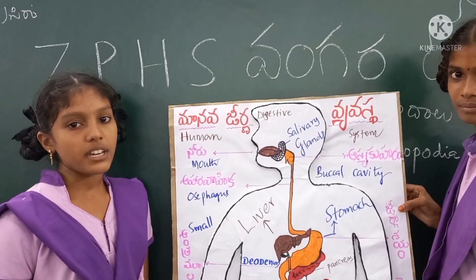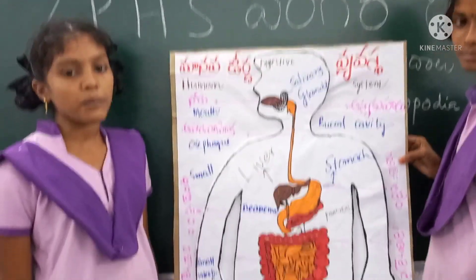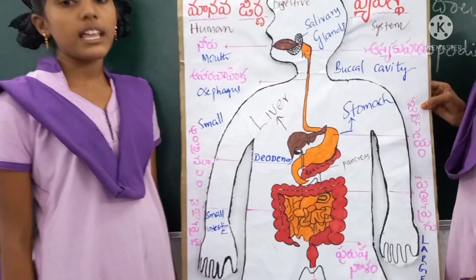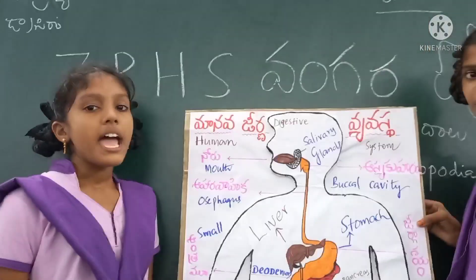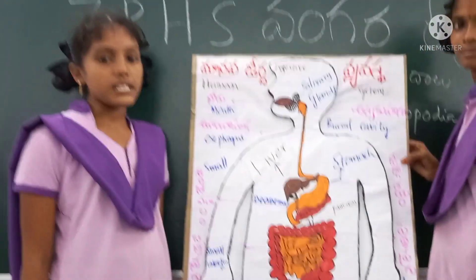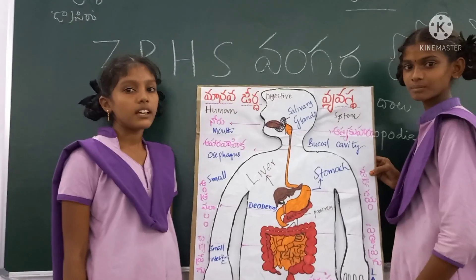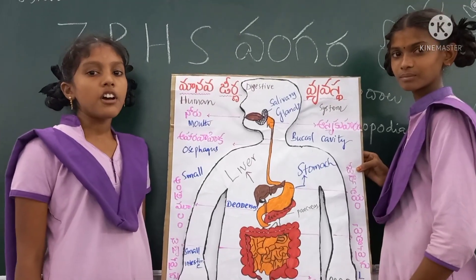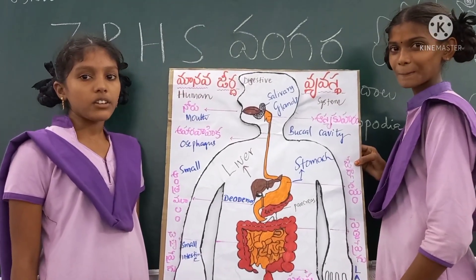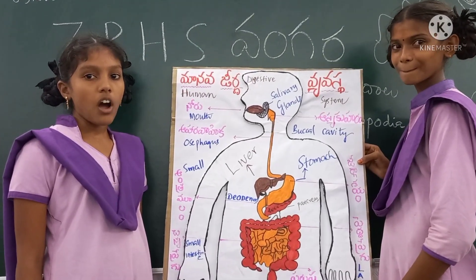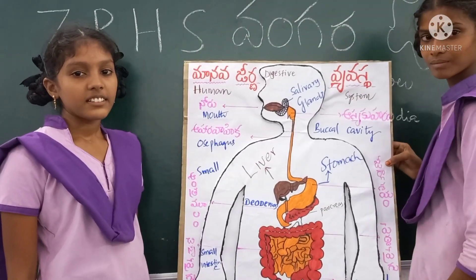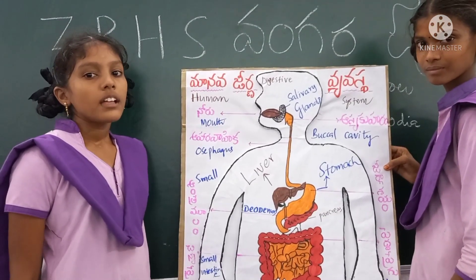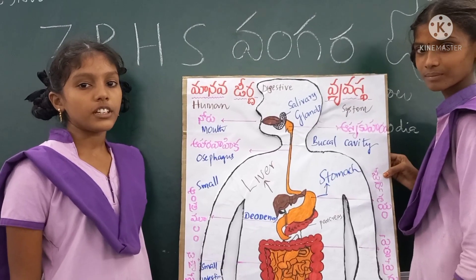Small Intestine is about 6 meters long. Digestion of food is completed here with the help of its juices. In its inner wall there are thousands of finger-like growths called villi, which absorb the digested food.